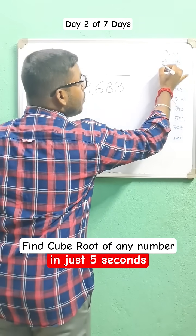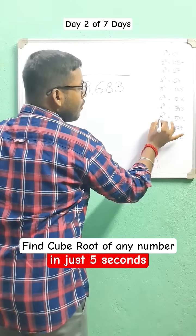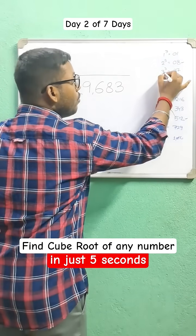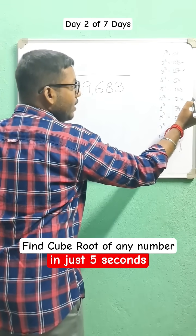For that, you need to remember the cube of 2 ends with 8 and cube of 8 ends with 2. Similarly, cube of 3 ends with 7 and cube of 7 ends with 3.